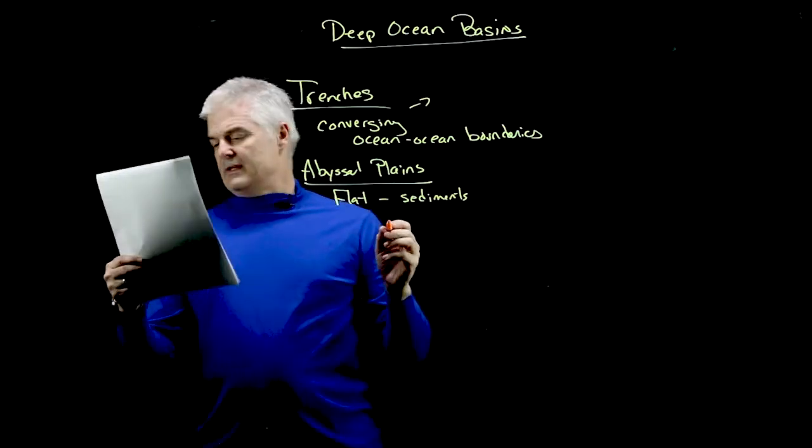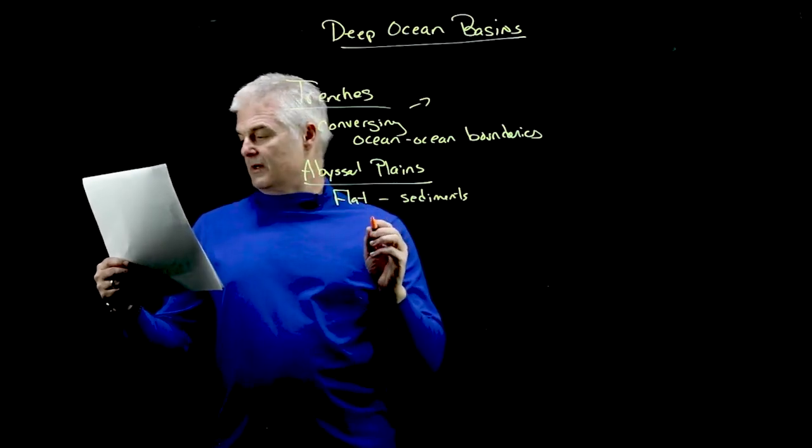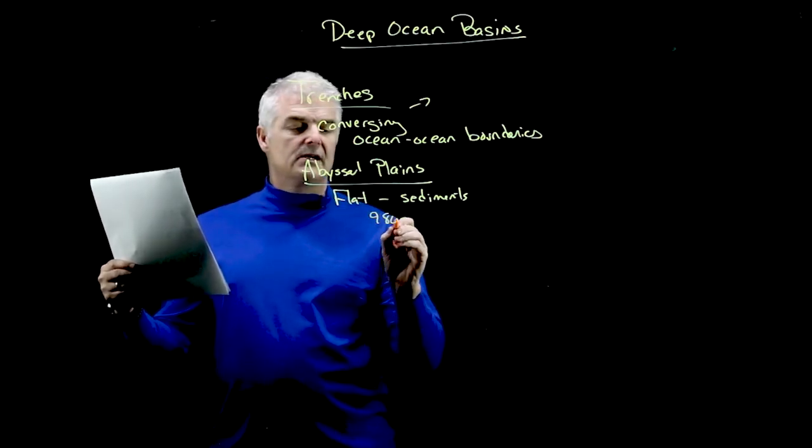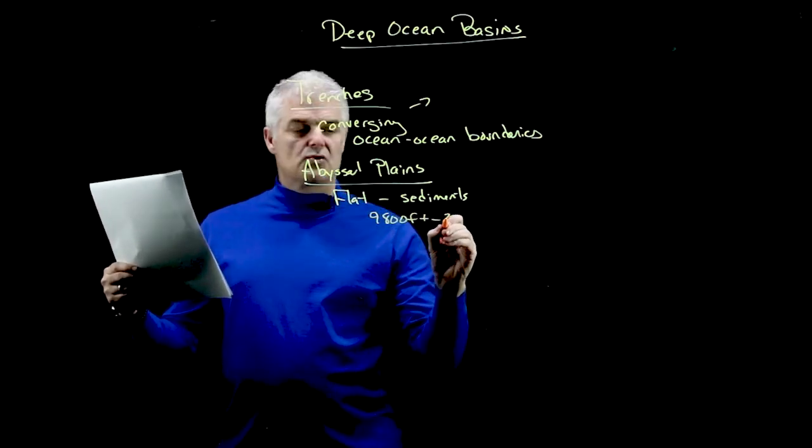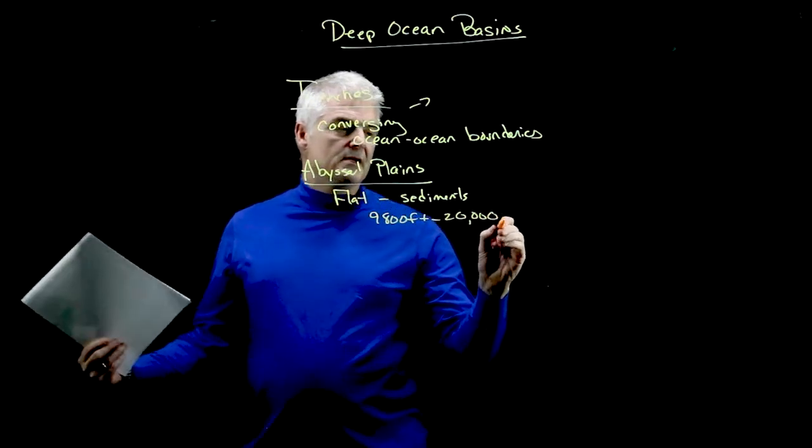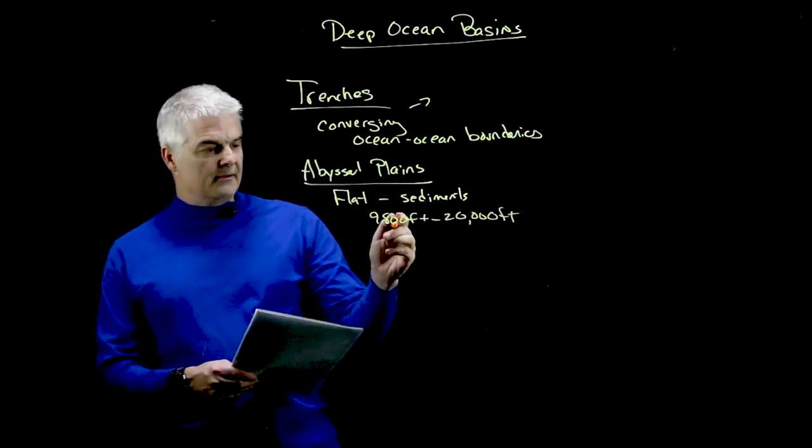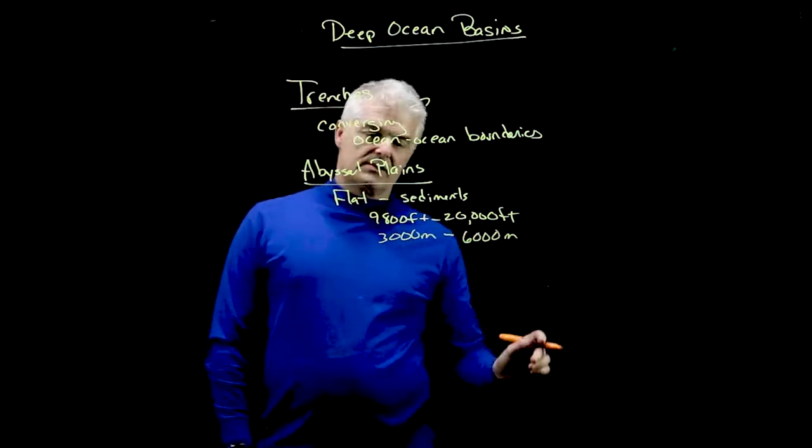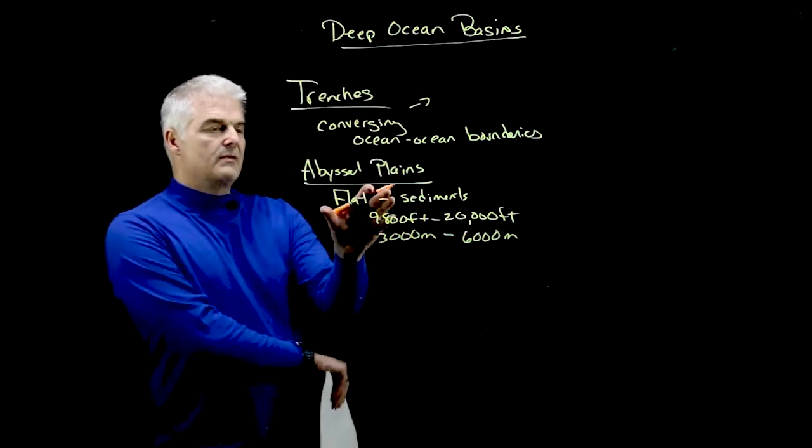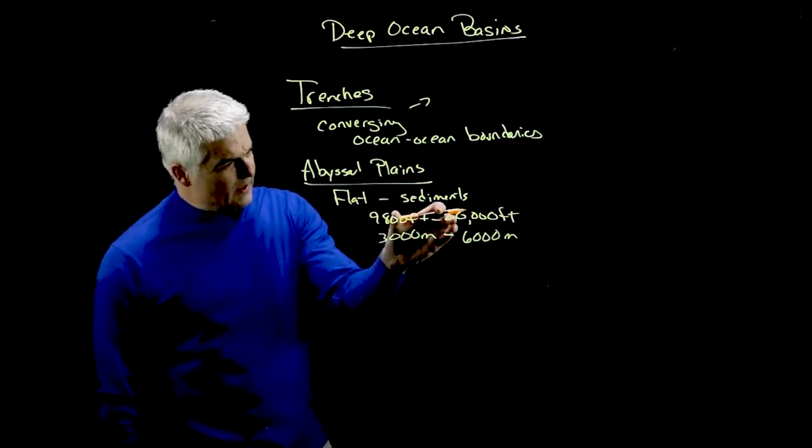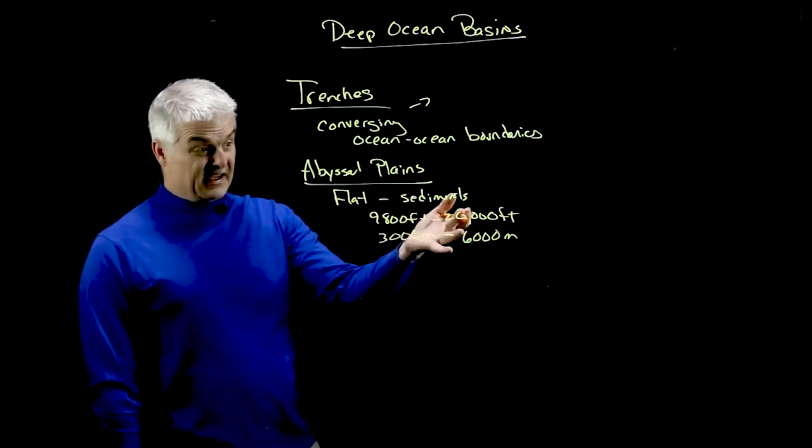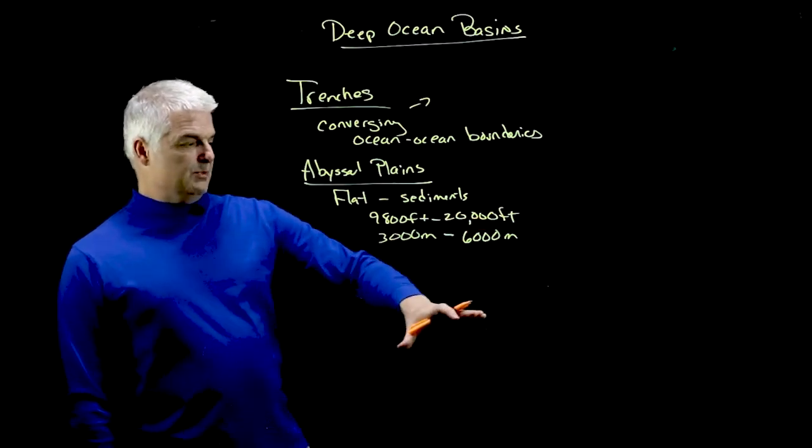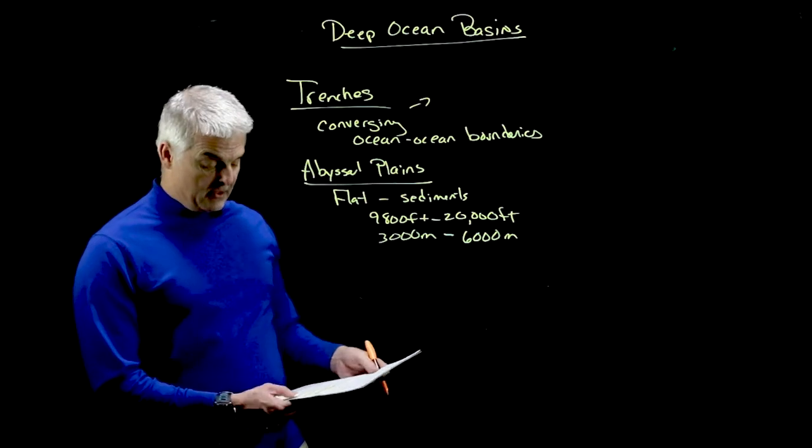By the way, the abyssal plains are found at depths between 9,800 feet to 20,000 feet. They're flat, but they're going to be at different depths. In kilometers, that's 3,000 to 6,000 meters. So they're deep, 10,000 feet down, 3,000 meters is kind of the minimum and then they can be even deeper. These are the deep parts of the earth.